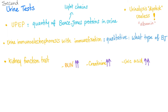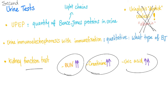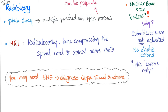Urine dipstick is useless because it only detects albumin, and in multiple myeloma the problem is with gamma globulins, not albumin. Kidney function tests show high BUN, high creatinine, and high uric acid because the kidney is failing.